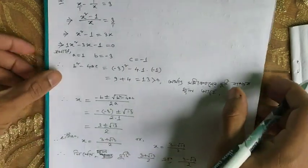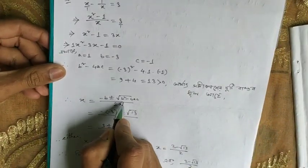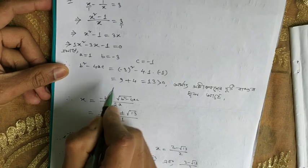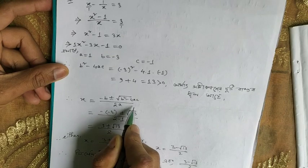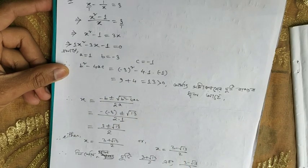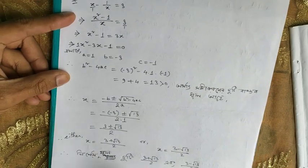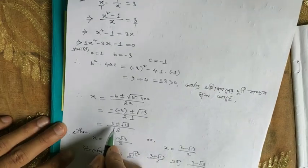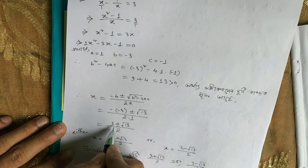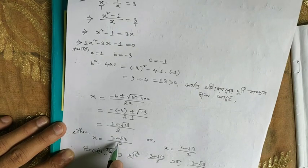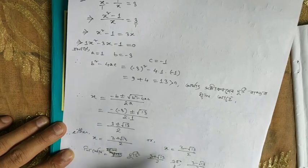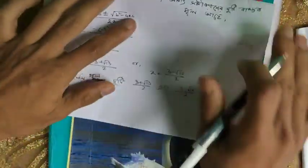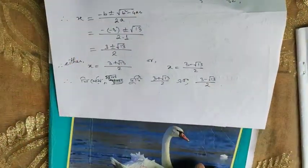The second part: x is equal to minus b plus or minus root of b squared minus 4ac, divided by 2a. So minus b is minus 4, which equals minus 3, then plus or minus — since the discriminant is 13 — for this part x is going to be equal to 1. So this is what we want.